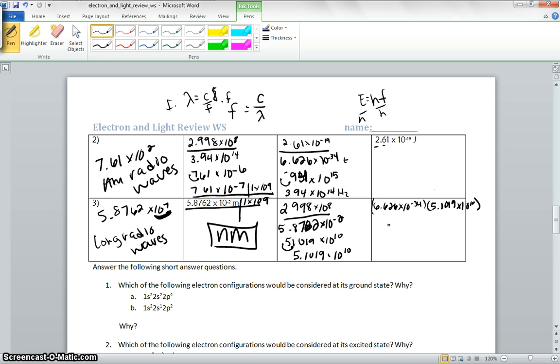6.626 times 5.1019 equals 33.805, 1, 2, 3, 4, 5 significant figures, times 10 to the negative 24th. We're going to make this number smaller, so this number gets bigger, so we're going to make it 3.3805 times 10 to the negative 23. Okay, that's all the energy.